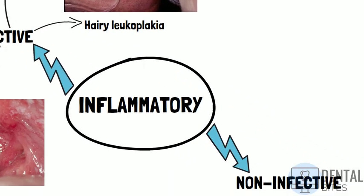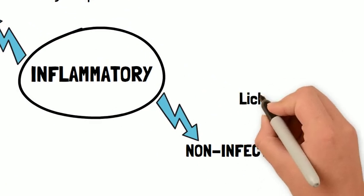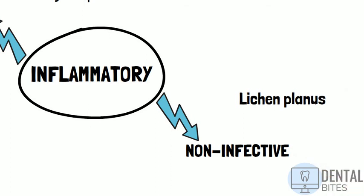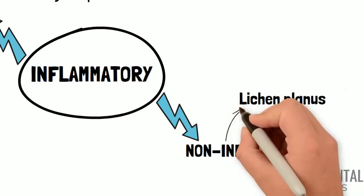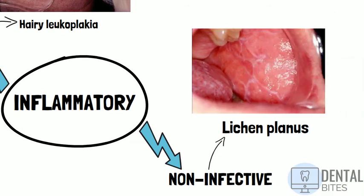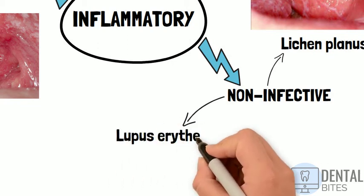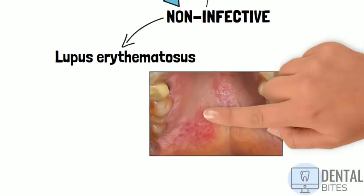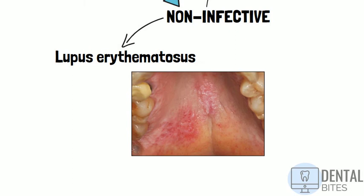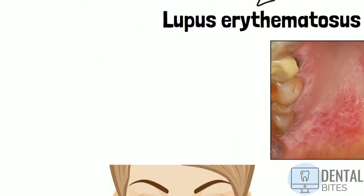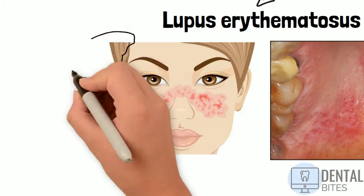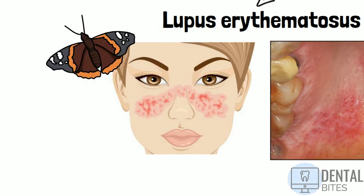Examples of non-infective inflammatory white lesions include lichen planus. This can present as white striae or white patches at any oral site and affects up to 2% of the adult population. Also lupus erythematosus, which is an autoimmune condition that can present with oral lesions resembling lichen planus. The most striking sign of lupus is a butterfly rash across the cheeks and bridge of the nose.